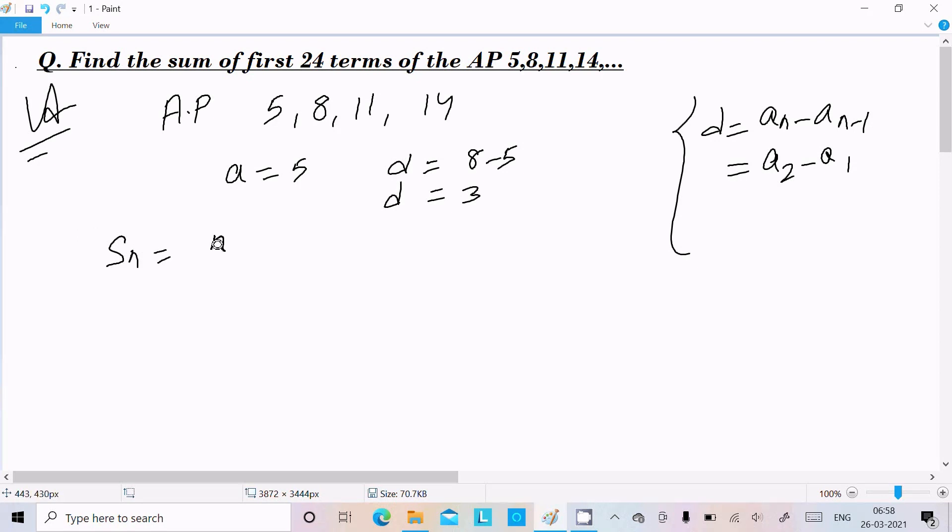...n divided by 2, times [2a + (n-1)d]. Here I'm going to calculate S_24: 24 divided by 2, times [2×a where a is 5, plus (24-1)×d where d is 3].